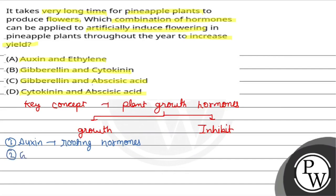The second hormone is gibberellin. Gibberellin is the hormone responsible for elongation — it increases the length of the plant. Its main role is to elongate the plant; it is not a flowering hormone.